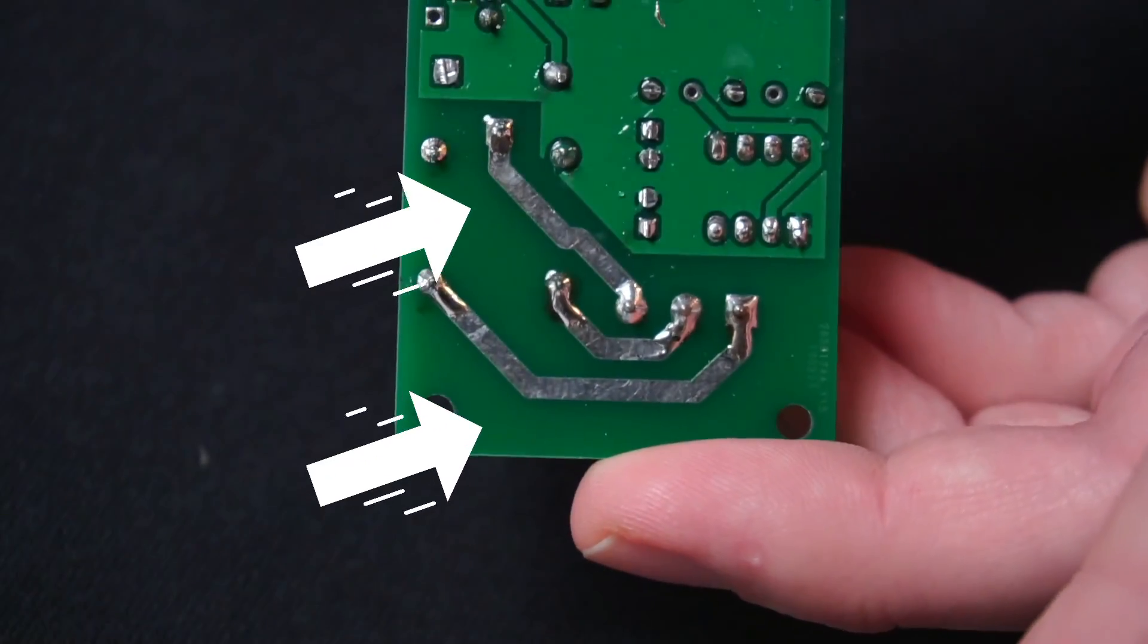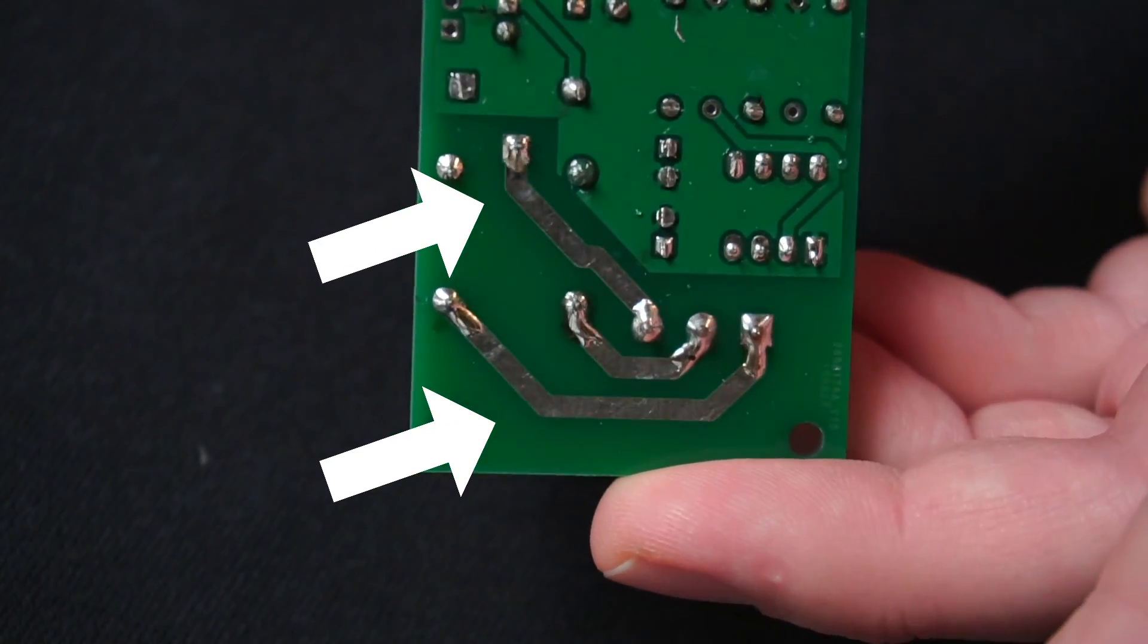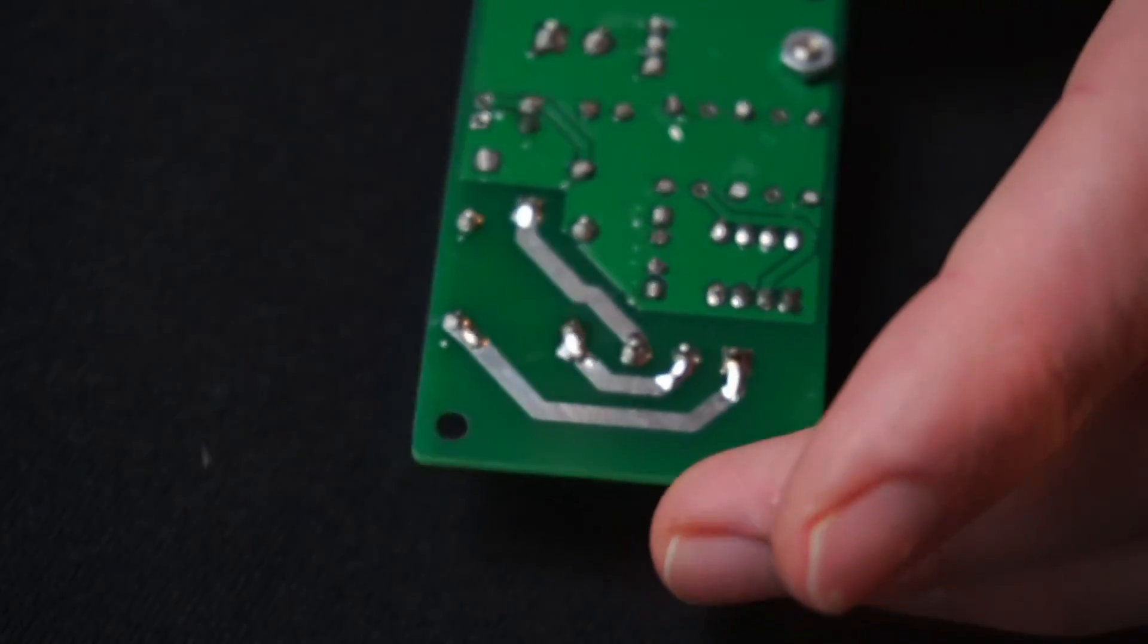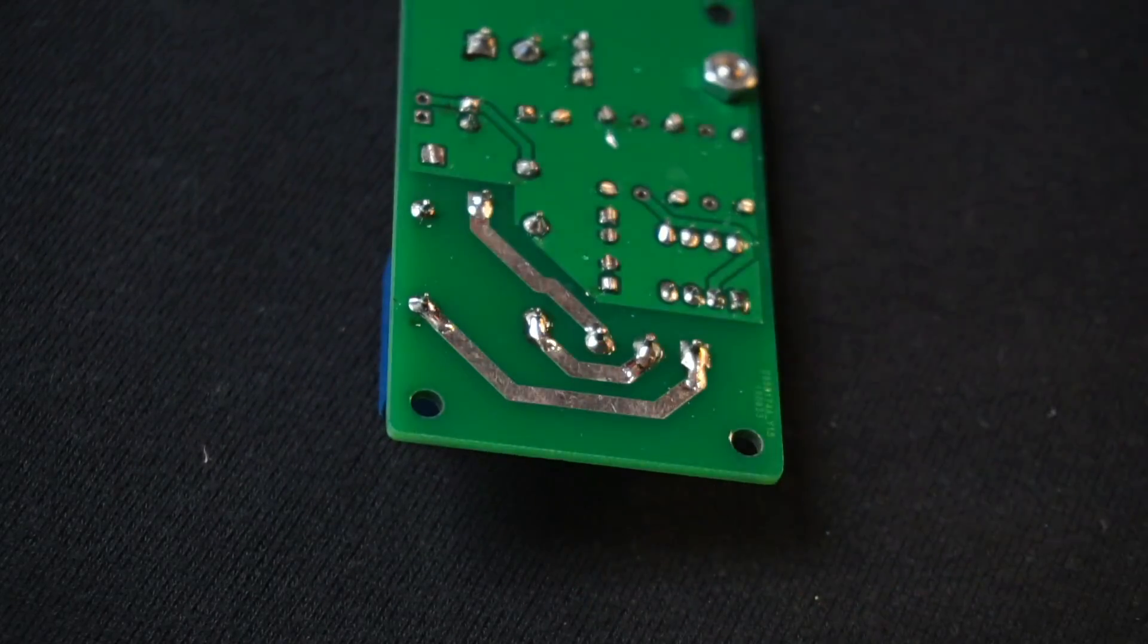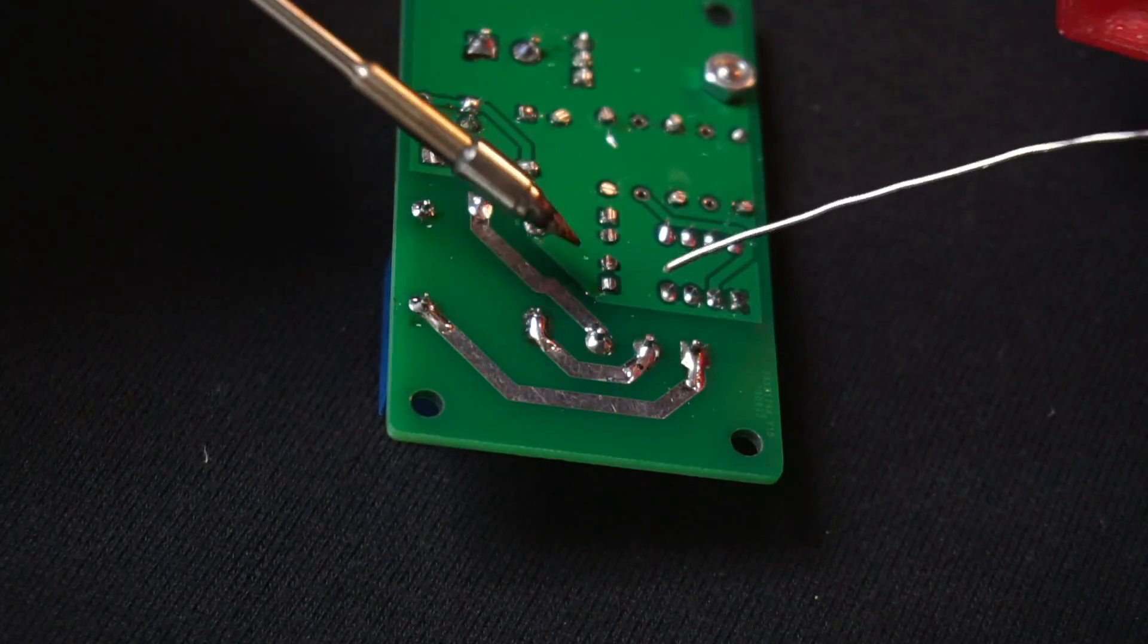You'll notice the copper traces that connect the relay to the terminals are exposed. This is so I can tin the traces with solder to improve performance for high current loads.